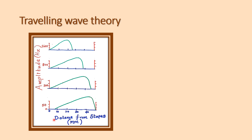This chart depicts the traveling wave theory. The x-axis depicts the distance — this end is the base, this end is the apex. The y-axis depicts the amplitude. The chart shows different sound frequencies: 50 Hz, 200 Hz, 800 Hz, and 1600 Hz.